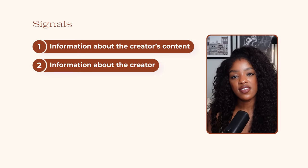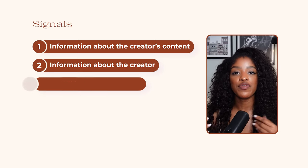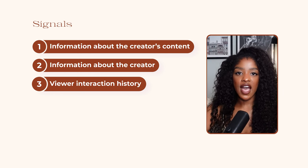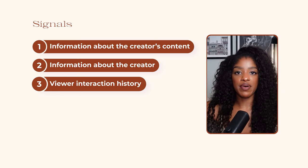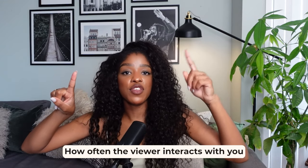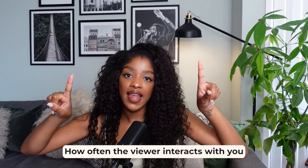Last but certainly not least, this signal is about the viewer interaction history — this is where the two different parties merge. The algorithms are looking at how often the viewer interacts with you and me, the creator. If you two send DMs to each other, your content's probably gonna be shared to that viewer when you post it.